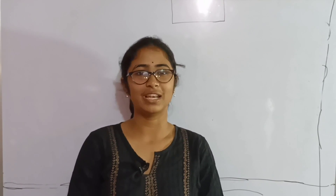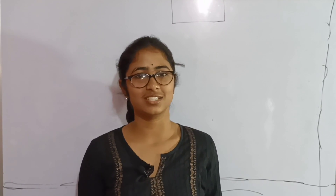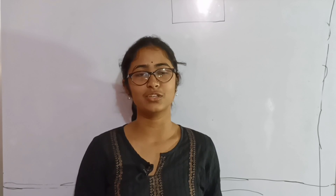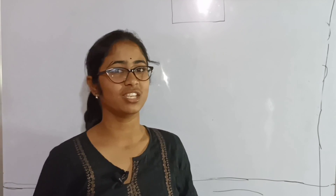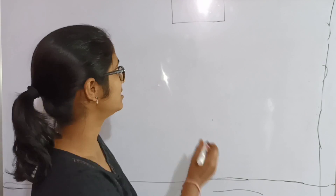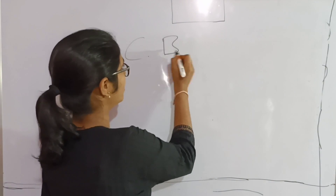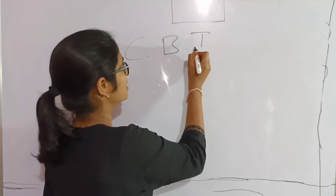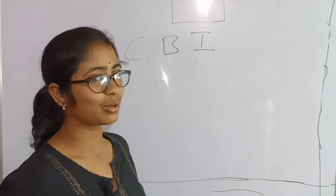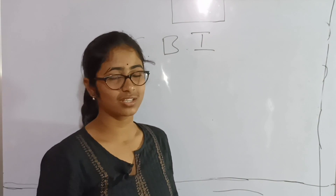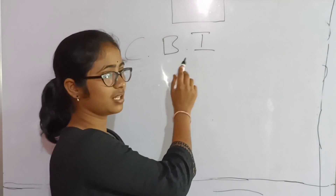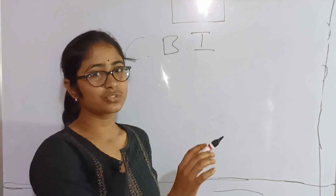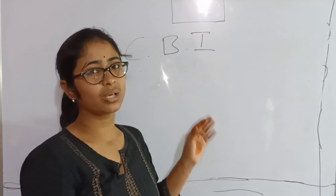Hi, hello friends, I hope you all are doing good. Welcome back to Honey G's classes. Today's topic is CBI — CBI stands for the Central Bureau of Investigation, but here it refers to three metals that were first used by humans.